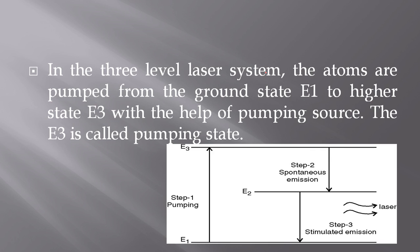In 3 level laser system, the atoms are pumped from the ground state E1 to the highest state E3 with the help of pumping source. The E3 is called the pumping state.